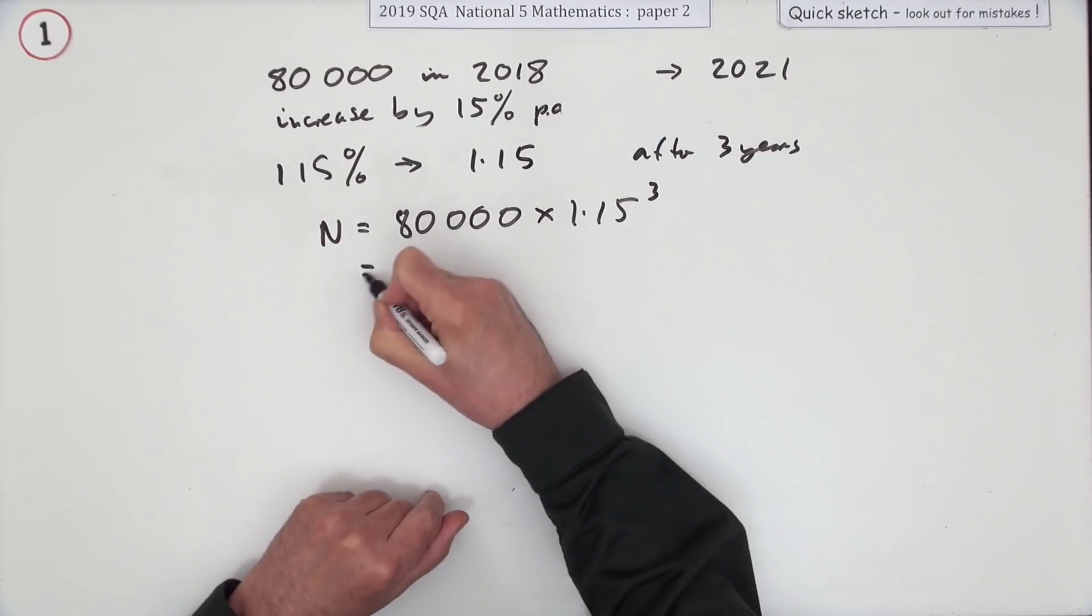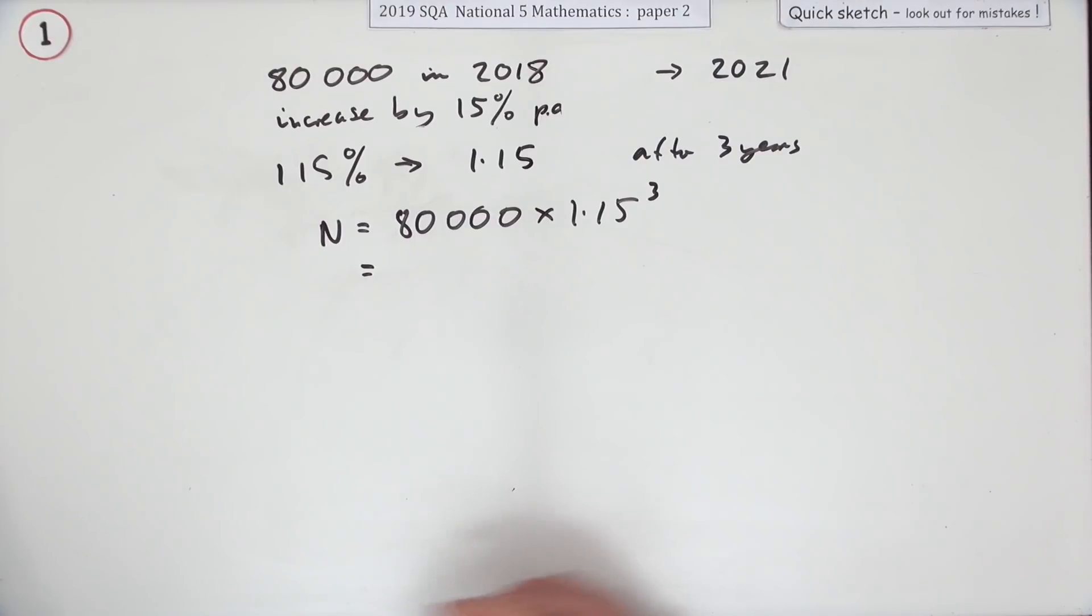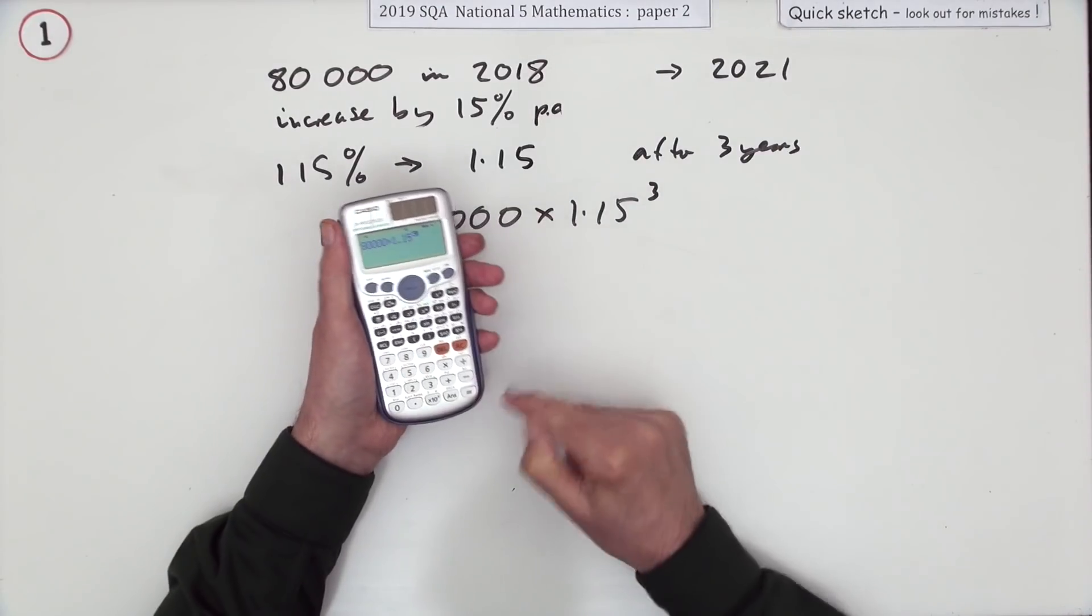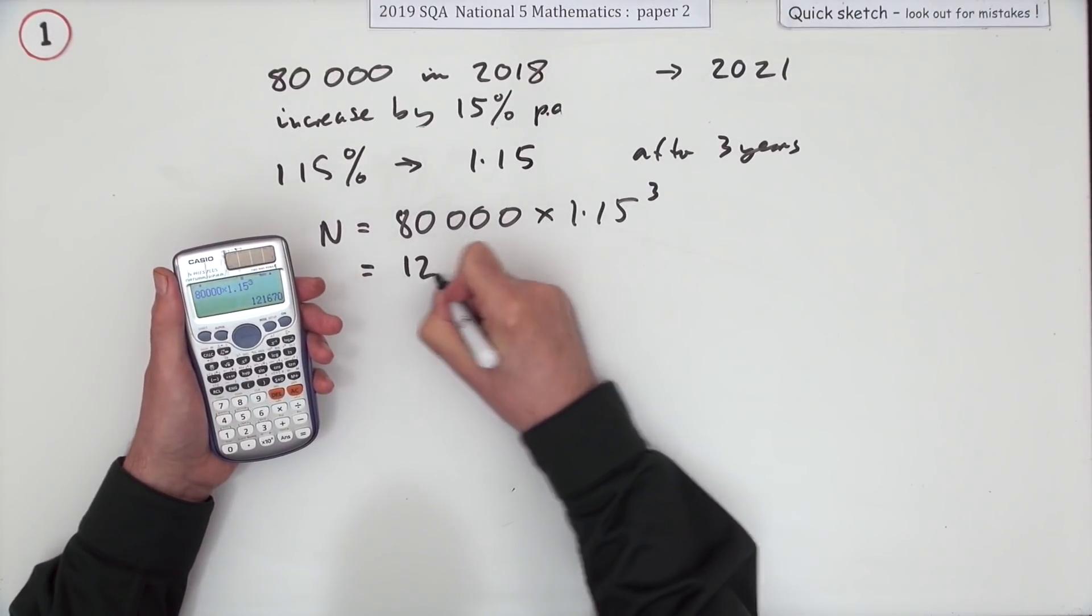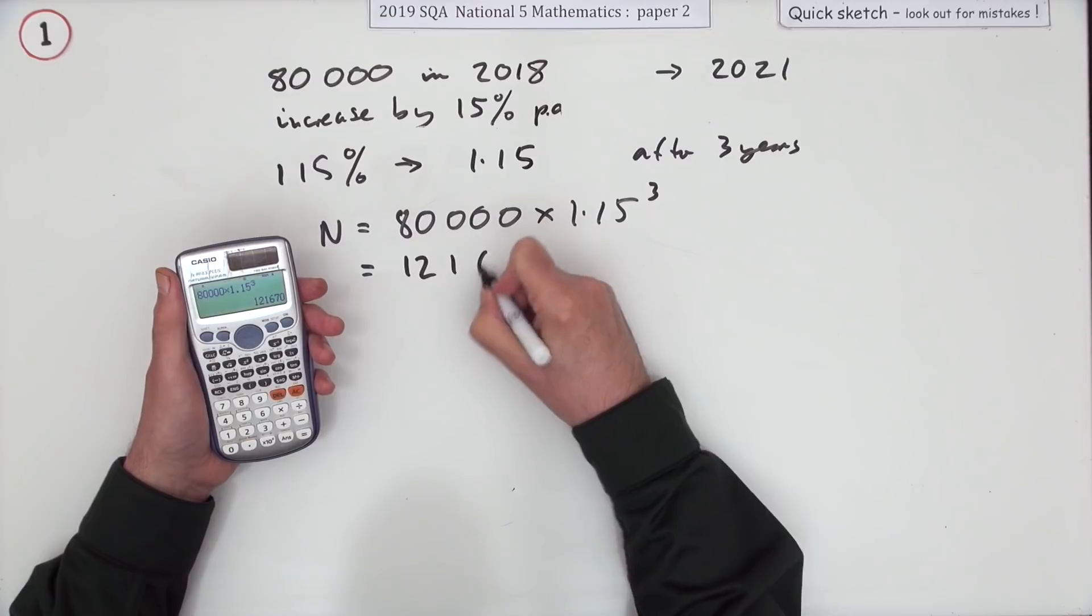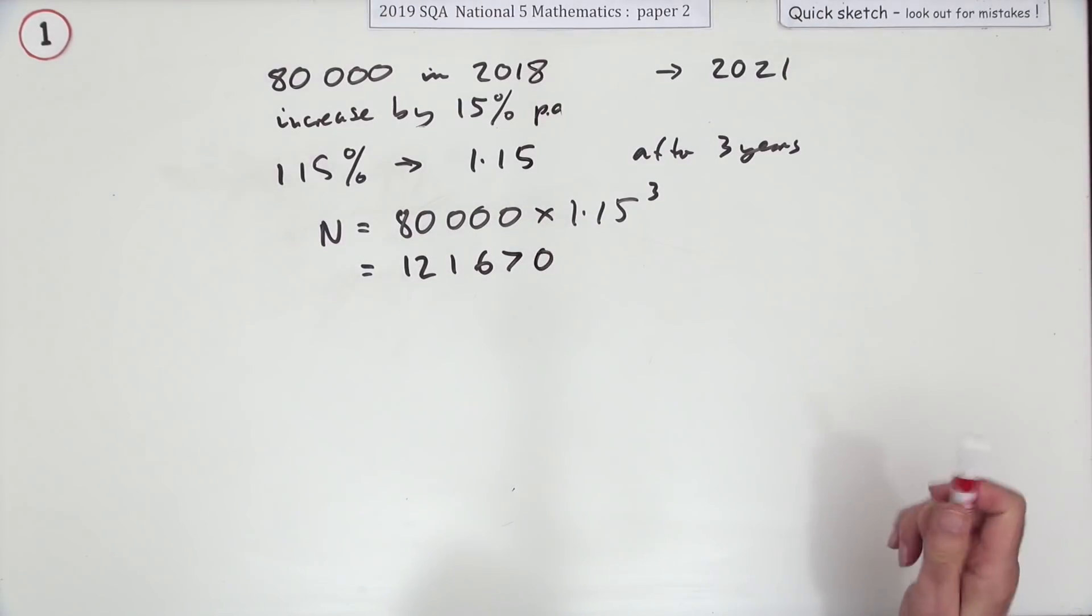Put that into your calculator, and when you put that into your calculator and press the button, you get 121,670.